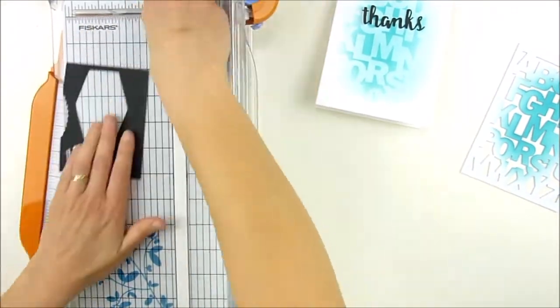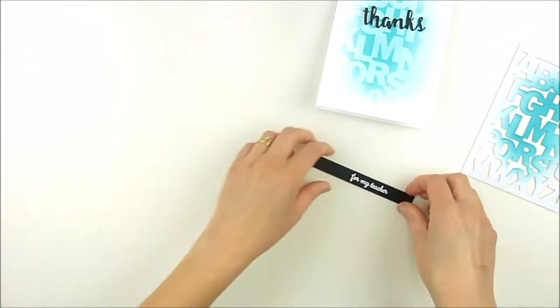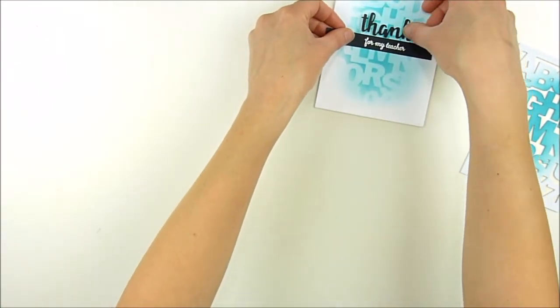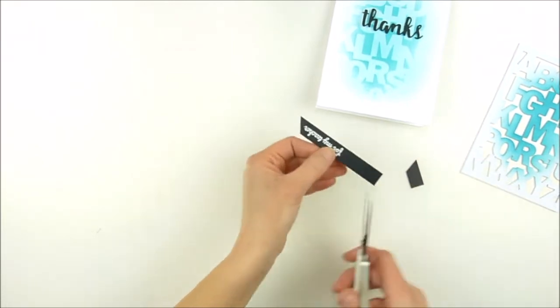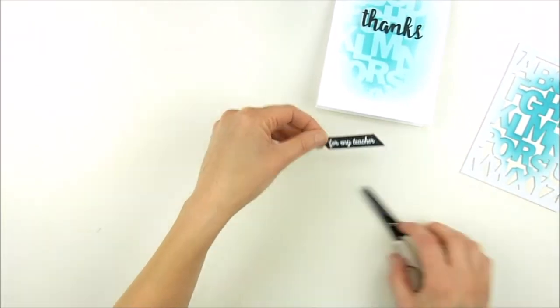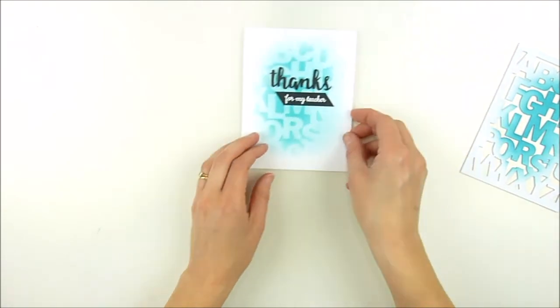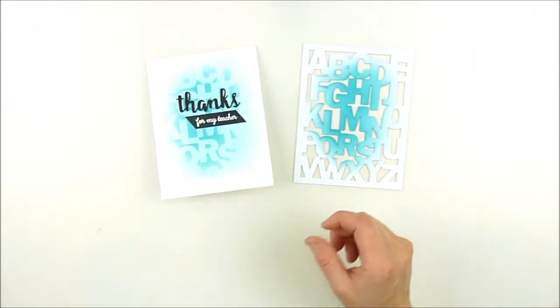Then I'm going to trim that down with my paper trimmer as I mentioned. And then once I plan where I want to lay that under there, I'm going to use my scissors to trim each side at a little bit of an angle just for some interest and to make it look a little more unique on there, kind of just add some fun angles and dimension.